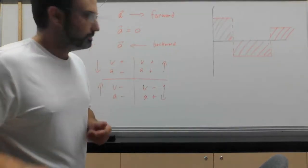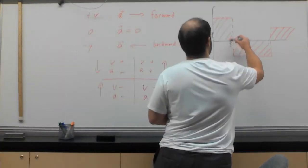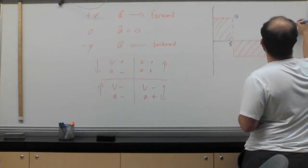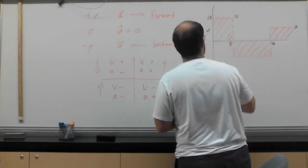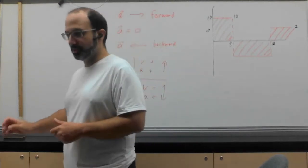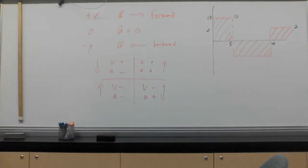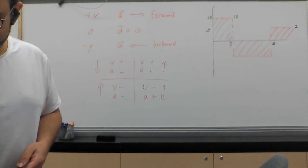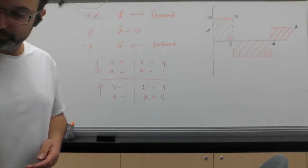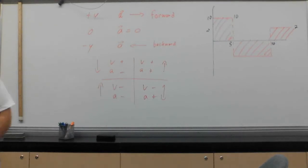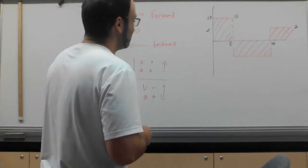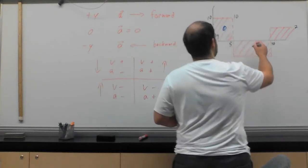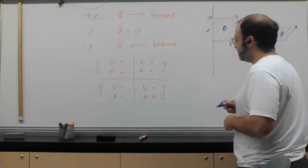Turn a new problem into an old problem you already know how to do. This acceleration graph — that's new. Area under the curve — that's old, I know how to do that. So delta v equals base times height. We can calculate these areas for each section. Let's say the first section goes from 0 to 5 seconds and the acceleration is 10 m/s². The second section goes from 5 to 10 seconds at negative 10 m/s². And the third section goes from 10 to 15 seconds at 2 m/s².